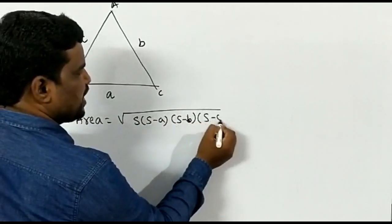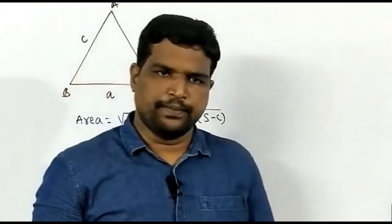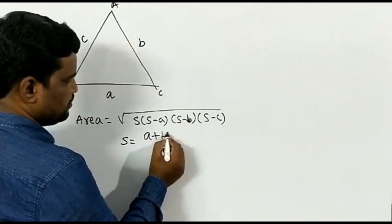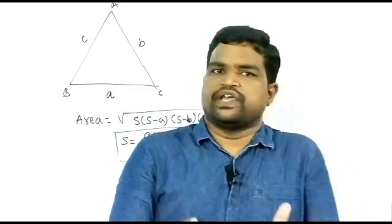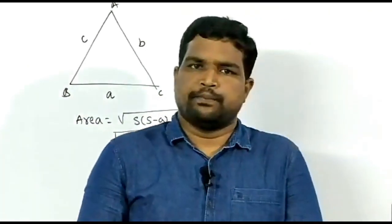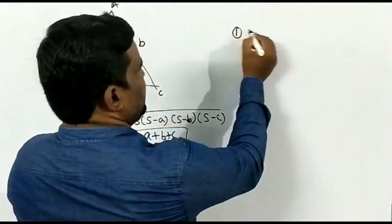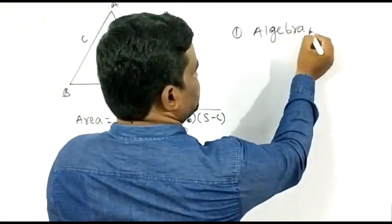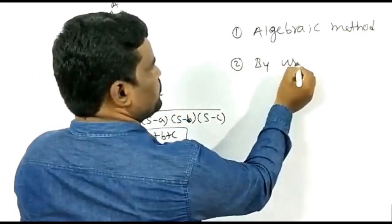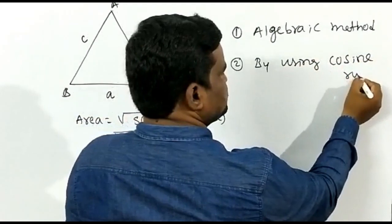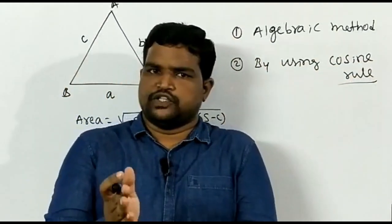The area of this triangle is given by: under root of S(S−A)(S−B)(S−C) square units, where S is the semi-perimeter, or half of the perimeter. So S = (A + B + C) / 2. We can derive Heron's formula by two different methods: first, by algebraic method, and second, by using the cosine rule.